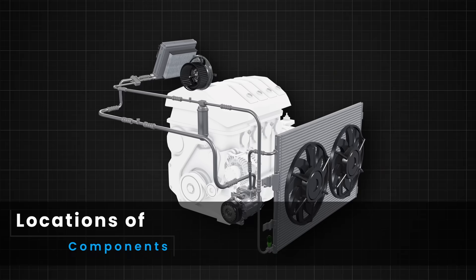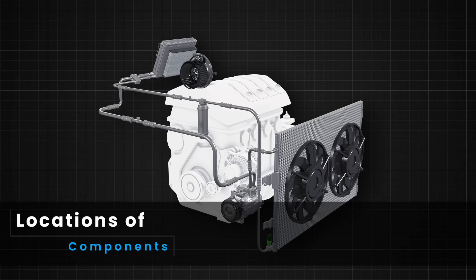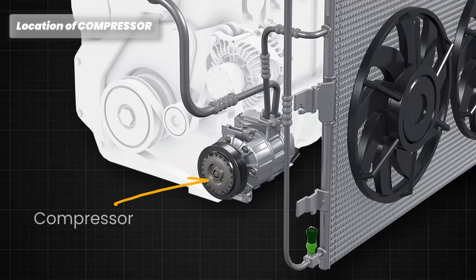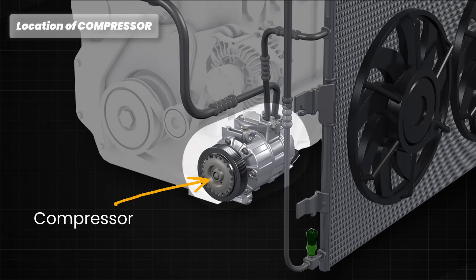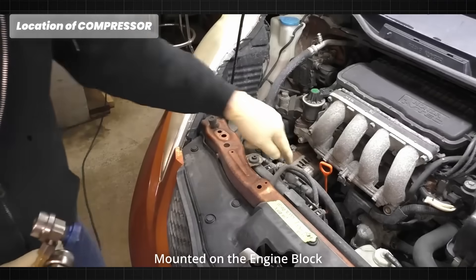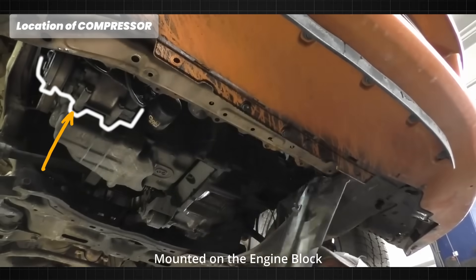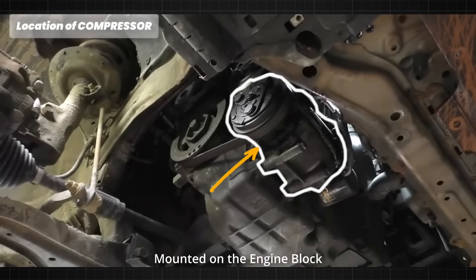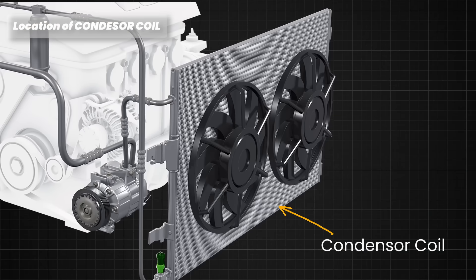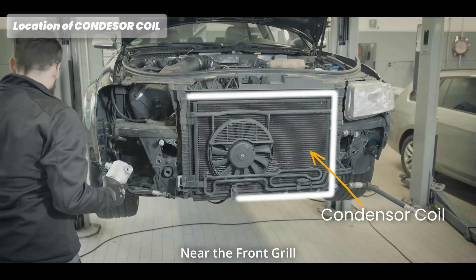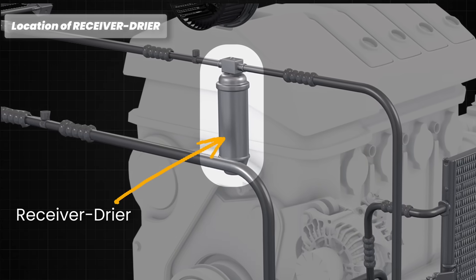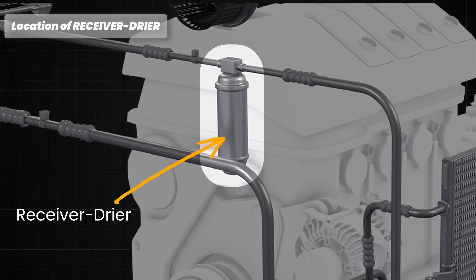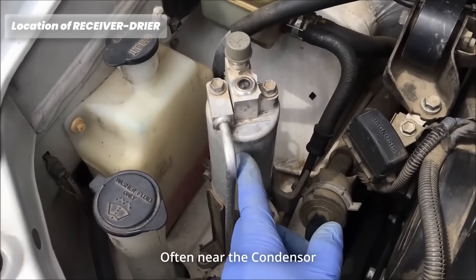We will see the locations of all components and after that their functions. The first one is the compressor — it is mounted on the engine block, usually at the front, or on brackets attached to the engine near the radiator and condenser. The condenser coil is located in front of the vehicle's radiator near the front grille. The receiver dryer is located between the condenser and the expansion valve, often near the condenser.